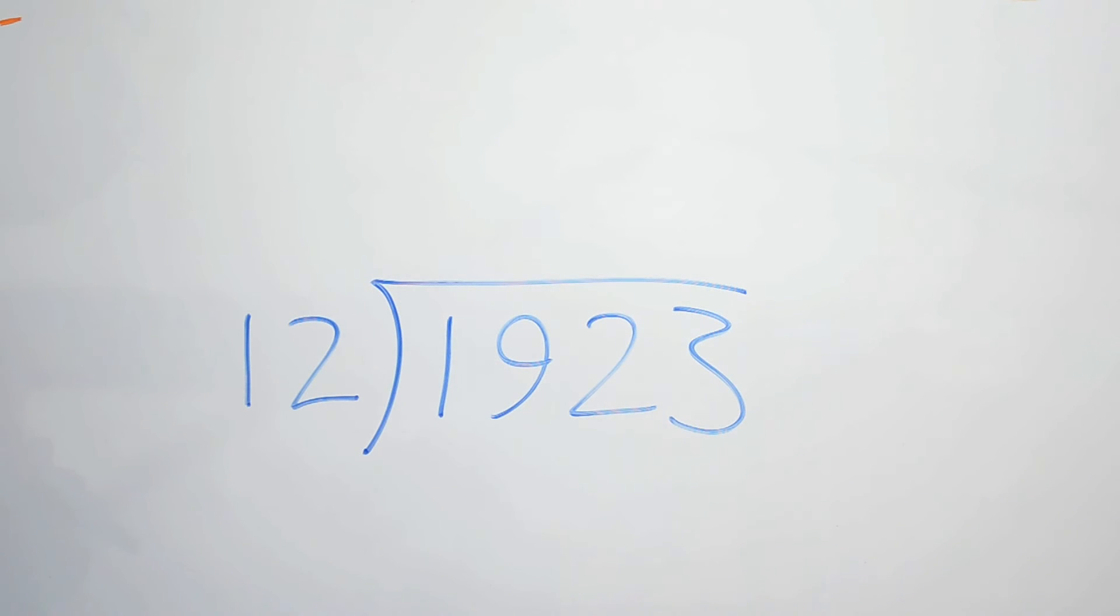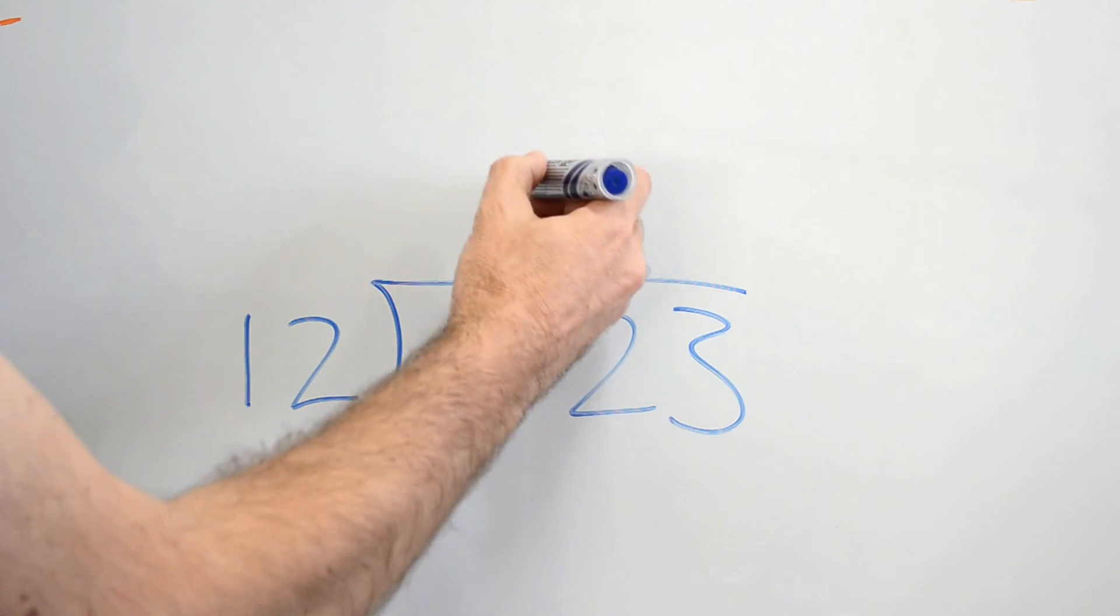Now, we can see straight away that 12 is not going to fit into 1. In fact, 12 can never fit into any single digit in here. So we're always going to be looking at 2. Same as 11, same as 10. In this case, 12 can fit into 19 how many times? Once. Only once.